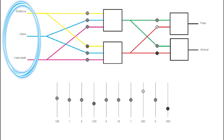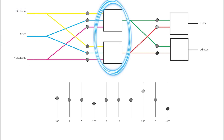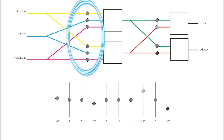Then we take this information and pass it to the neurons, which are these four squares. But before it reaches the neuron, this information will be multiplied by a number, represented by these little balls. Each little ball is a number which can vary from minus a thousand to a thousand. This number is usually called a weight and its function is to increase or decrease the signal.